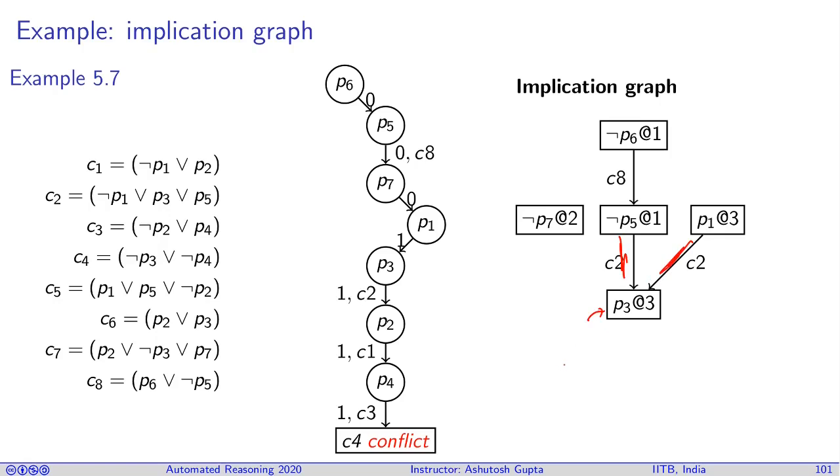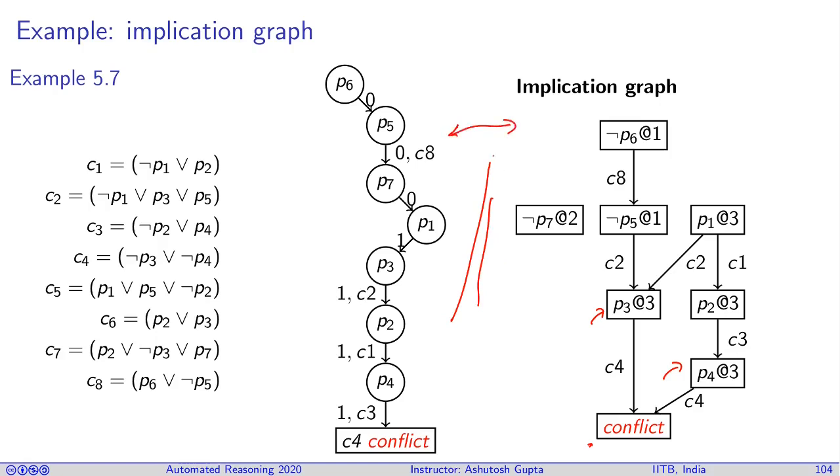And we add a node p3 at decision level 3. And we carry on. Similarly we add a node for p2 because of clause c1, and carry on. Then we say p4 is assigned because of clause c3. Now because of clause c4 we have a conflict. So we have an extra additional node conflict which says this literal has become true and this literal has become true, and clause c4 has both the literals and nothing else. Therefore this is conflict. So you add a conflict node and connect with the literals that made this conflict happen. So this object is called an implication graph. Both of these objects which you're looking at are just different perspectives on the same information. However, the implication graph gives you a bit more understanding of why and how things happened.